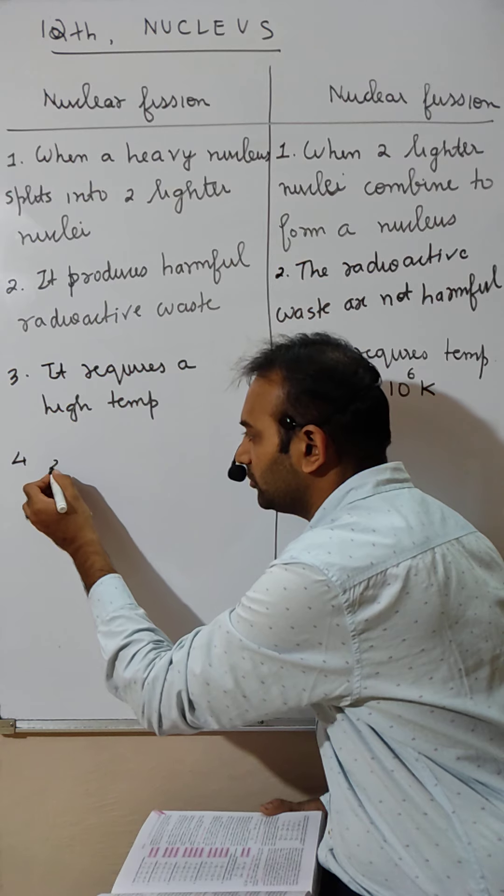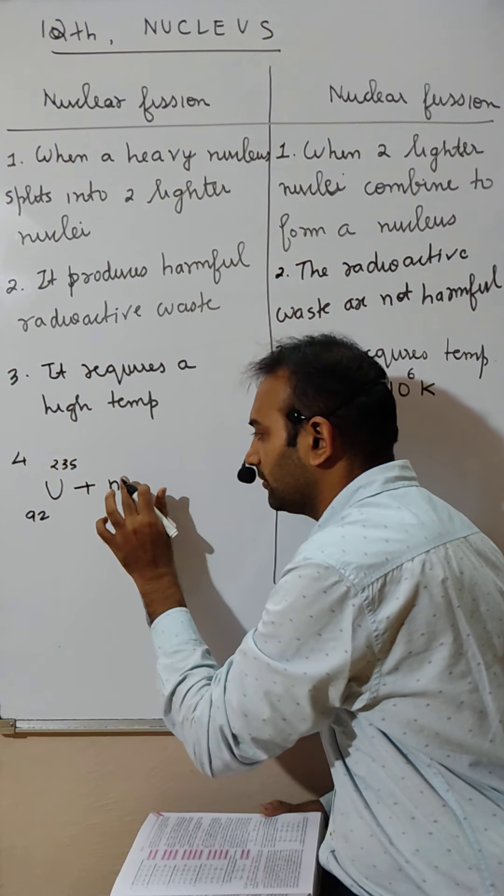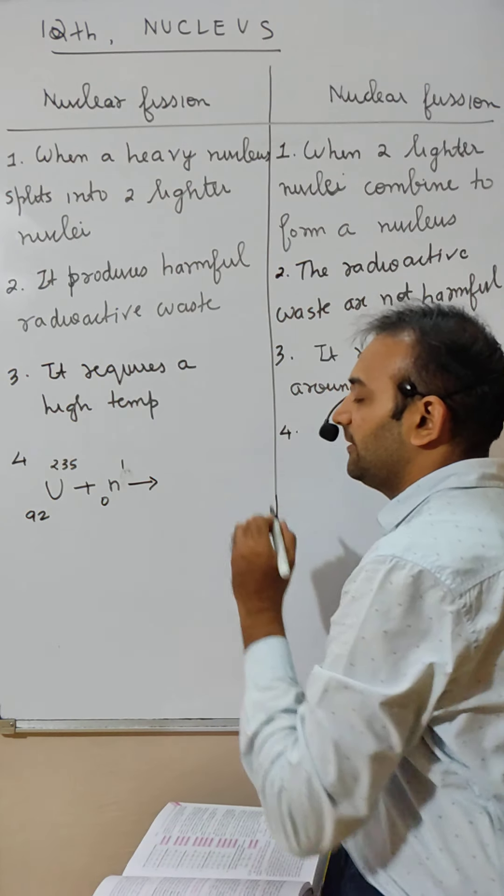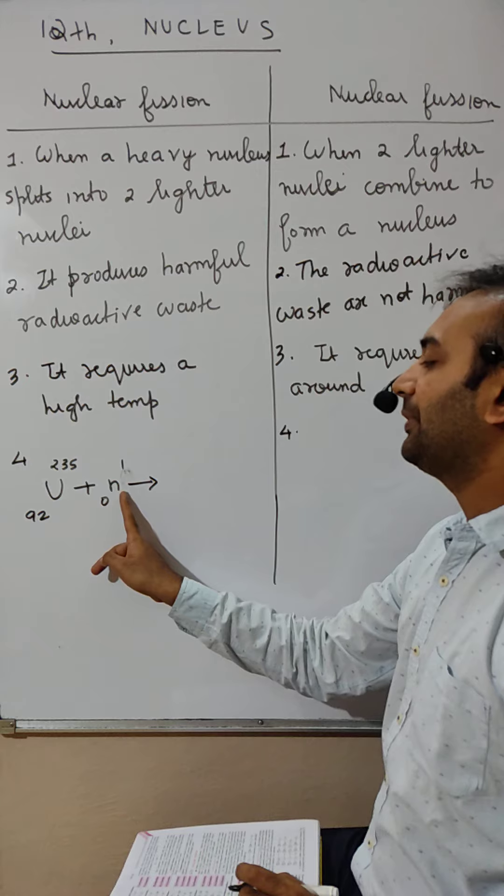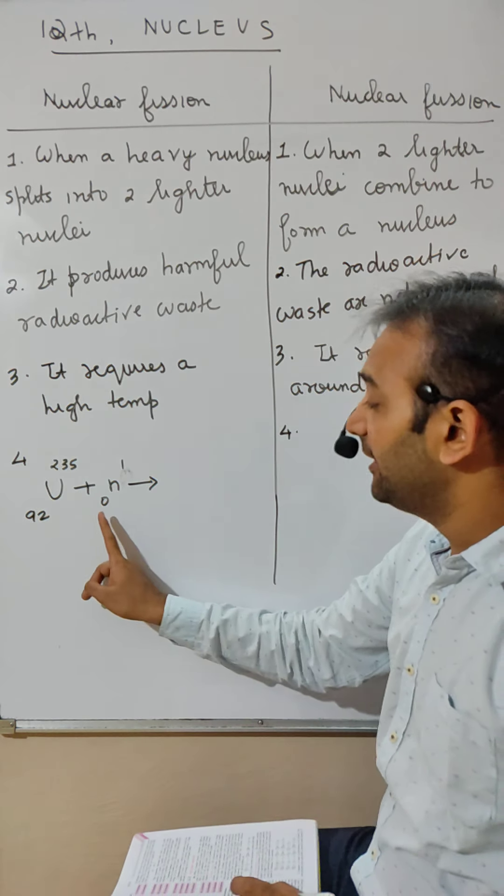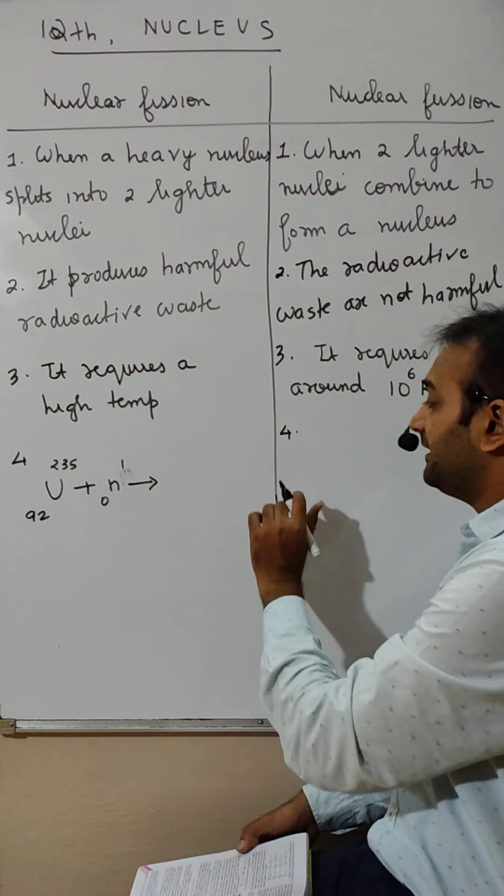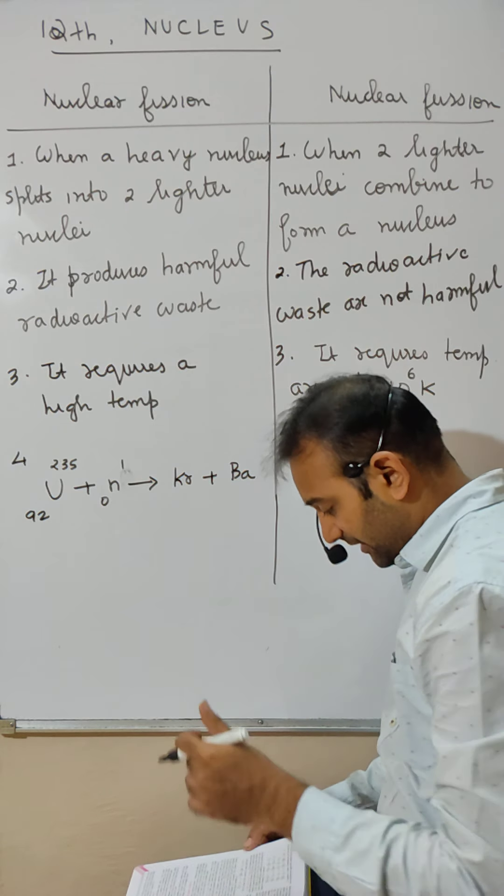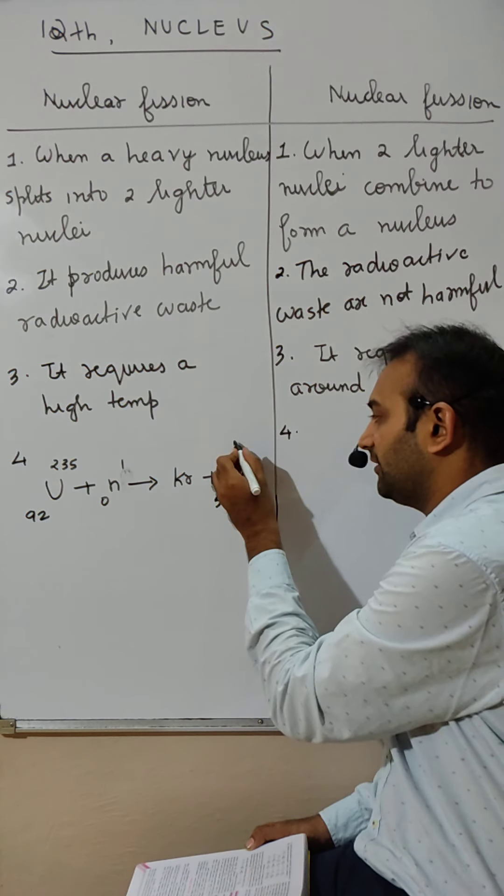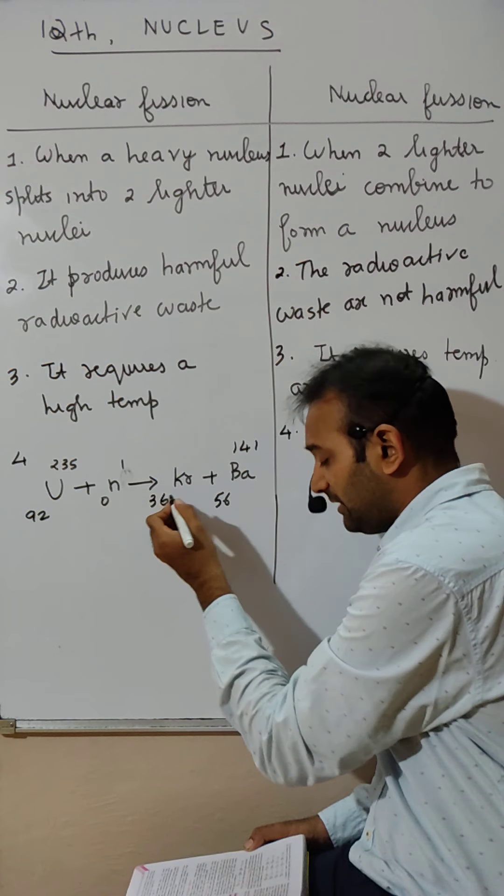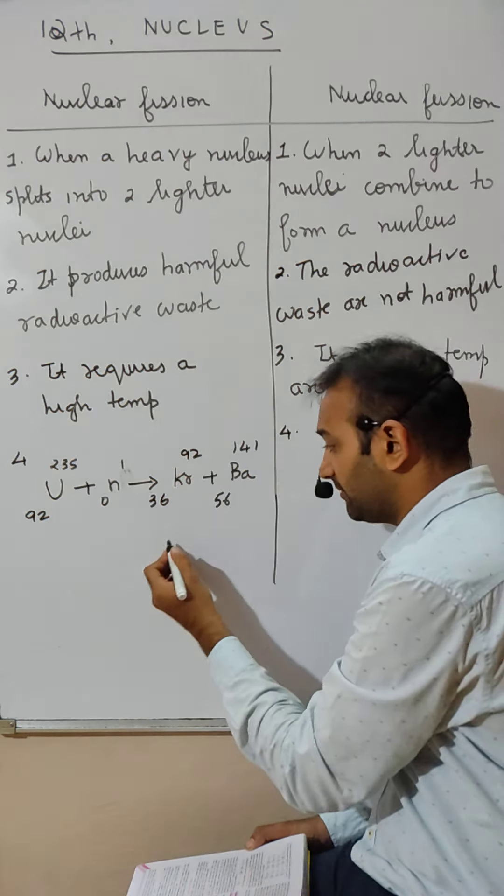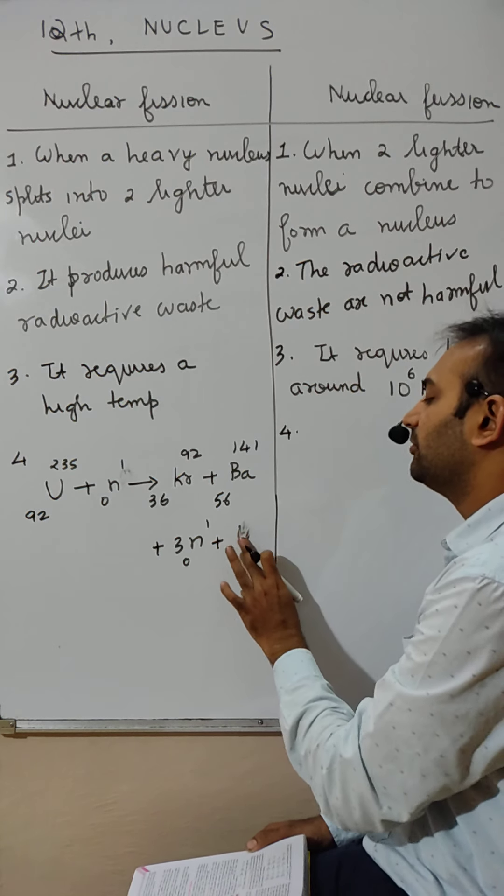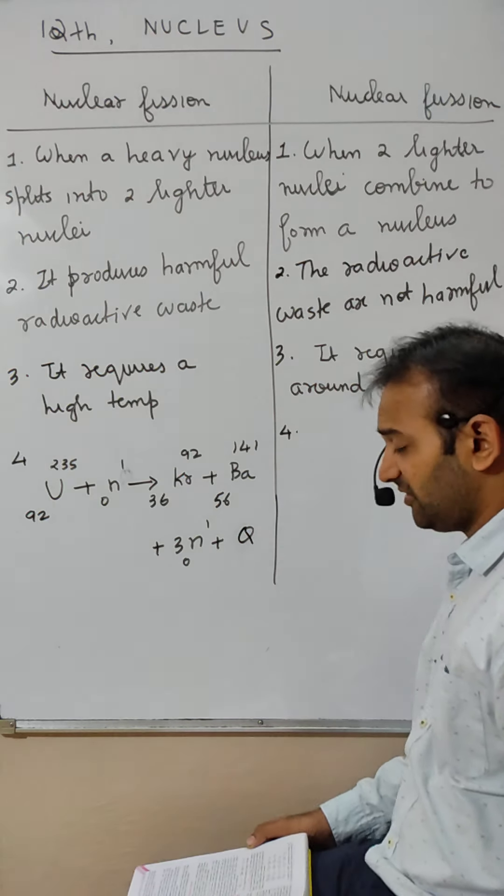Uranium 92-235 plus one neutron. Neutron will come and hit uranium. So it gives krypton and barium. 56 barium 141 and 36 krypton 92. Plus three neutrons plus energy. Energy can also be written as Q. This is the fourth difference showing both examples.